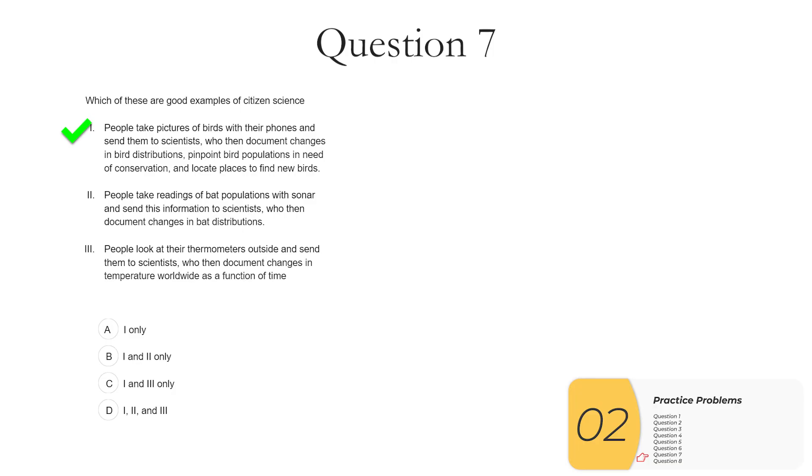Two, people take readings of bat populations with sonar and send this information to scientists. Well, right away, we know a regular person is not going to have sonar. So this is not a good example of citizen science because a regular person does not have specialized equipment.